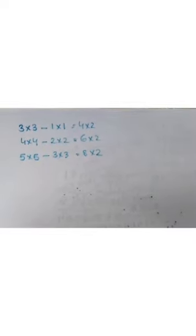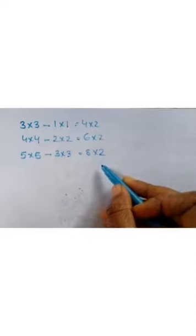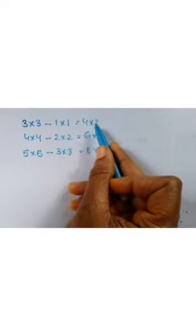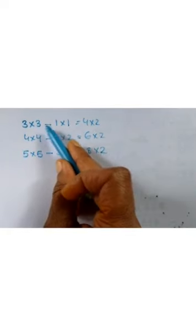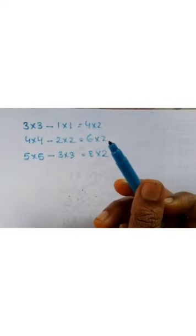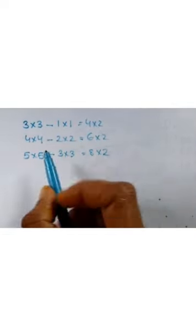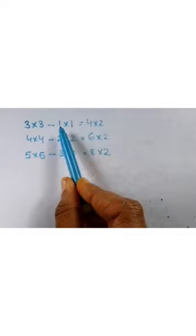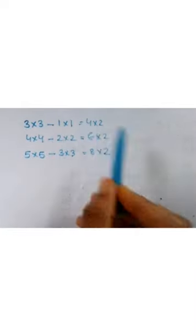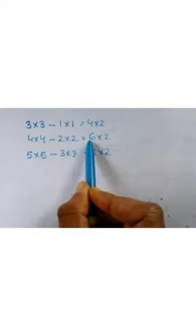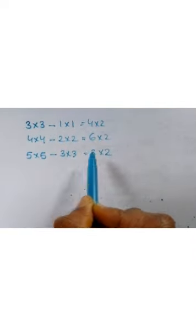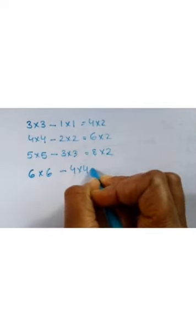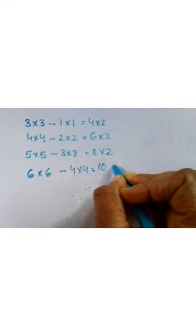Look at this problem. A pattern is given and we want to find out some more steps. 3×3 − 1×1 is given: 4 twos are 8, and 3×3=9, 9−1=8 — same answer. Without finding the product, we arrive at the answer: 3+1=4, 4+2=6, 5+3=8. So 6×6 − 4×4 = (6+4)×2 = 10×2.